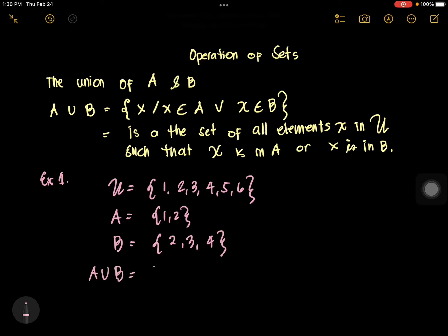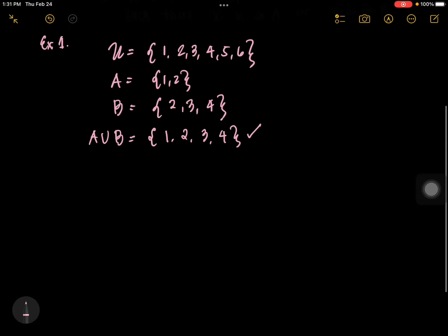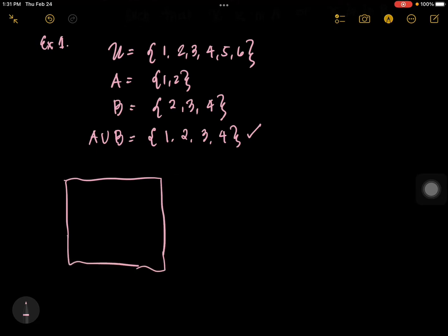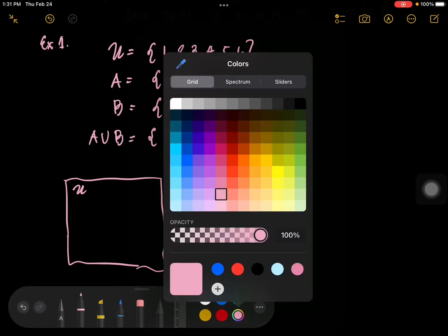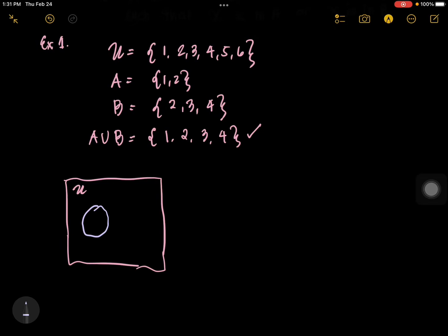The answer is: if you just unite the elements in A and B, you have 1, 2, 3, 4. So this is the answer. To discuss this further using the Venn diagram — union is like this: you just shade all elements in A and B, including the intersection.